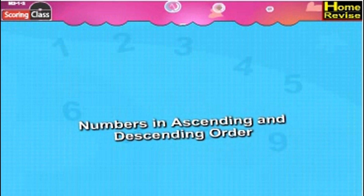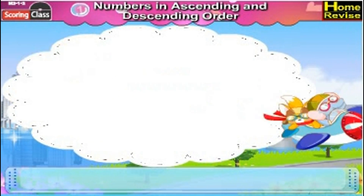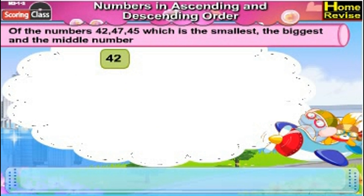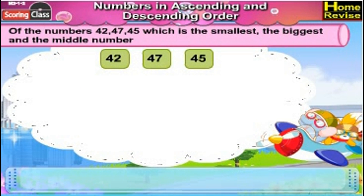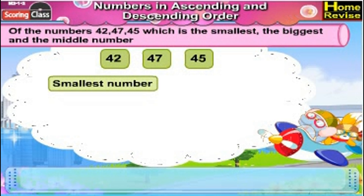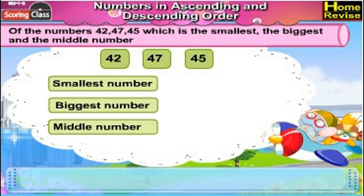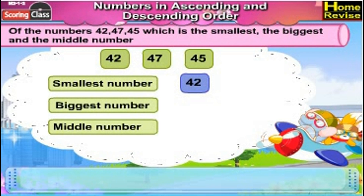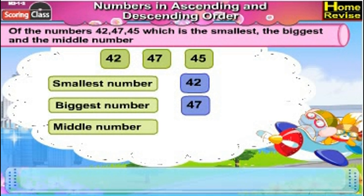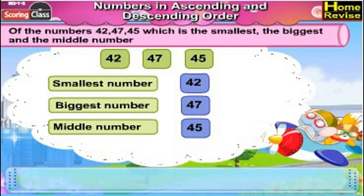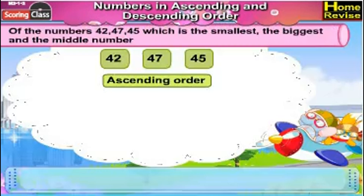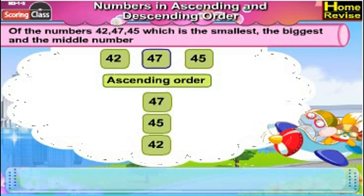Let's put the numbers in ascending and descending order. The numbers are 42, 47, and 45. Which is the smallest, the biggest, and the middle number? When counting, the number 42 comes first, so 42 is the smallest. 47 comes last, so 47 is the biggest number. 45 is between 42 and 47. So the ascending order of these numbers is 42, 45, 47.